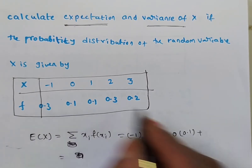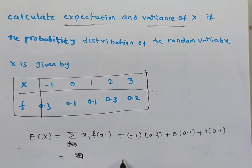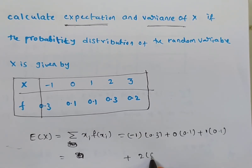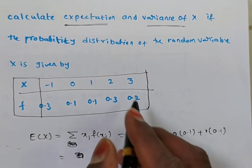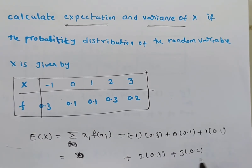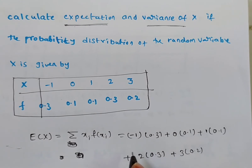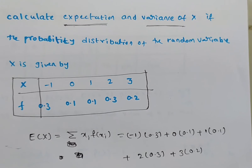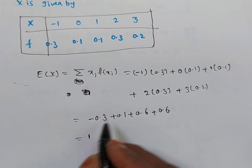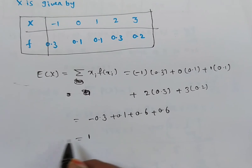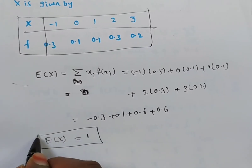Plus x3 is 1, f(x3) is 0.1. Plus x4 is 2, f(x4) is 0.3. Plus x5 is 3, f(x5) is 0.2. Adding all: minus 0.3 plus 0 plus 0.1 plus 0.6 plus 0.6 gives 1.3 minus 0.3, which is 1. So expectation of x is 1.